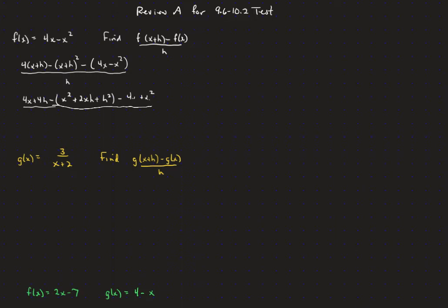Now we distribute that minus sign. We've got — and I left off the 4h — minus x squared, minus 2xh, minus h squared. That was a minus 4x and a plus x squared. And that's still all over h.